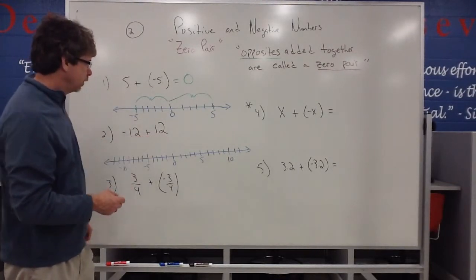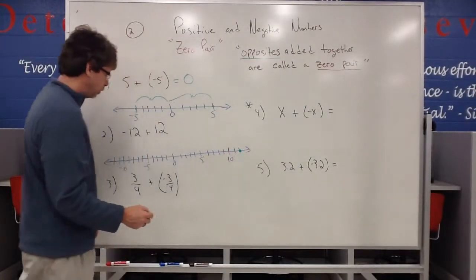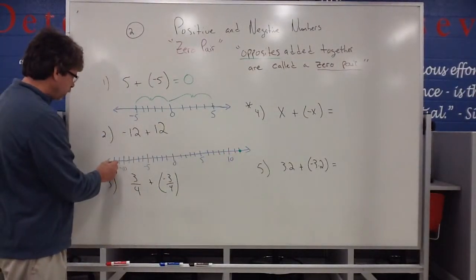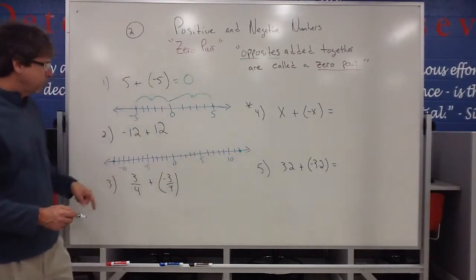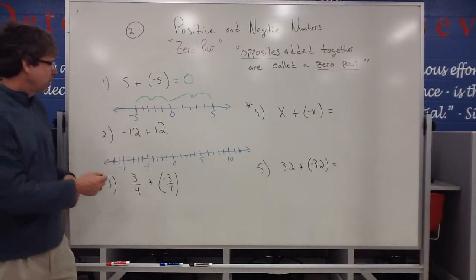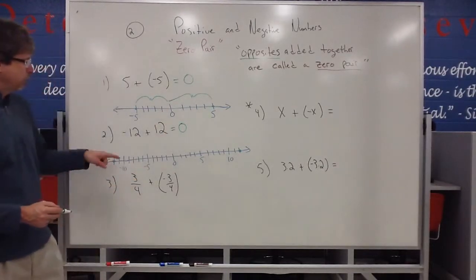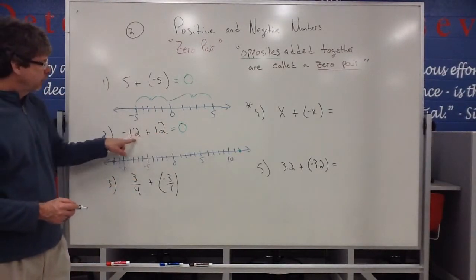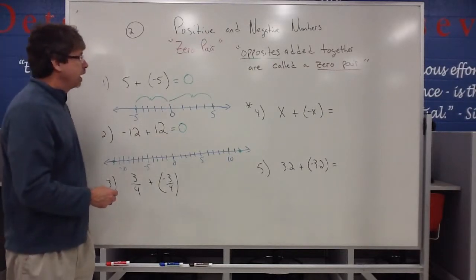When I see a negative 12 and a positive 12, notice that 12 is over here on this side of the zero. Meanwhile, negative 12 is way over here on this side of zero. But they're the same distance from zero, so therefore we call those opposites. When you add these opposites together, they end up being zero. That's why we call it a zero pair. If you add opposites, they will always add to zero.